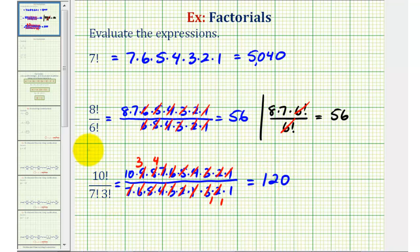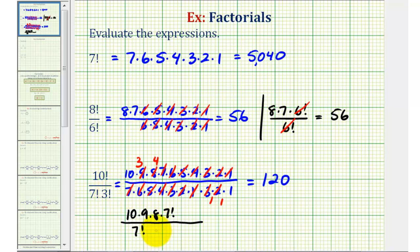Let's show this another way. Noticing that we have ten factorial in the numerator and seven factorial in the denominator, we can write ten factorial as ten times nine times eight times seven factorial. In the denominator we have seven factorial times three factorial, which is three times two times one. Seven factorial over seven factorial simplifies out. Then nine and three share a common factor of three, and eight and two share a common factor of two, giving ten times three times four, which is 120.